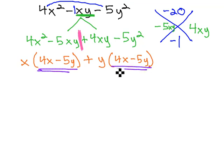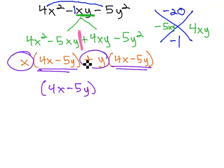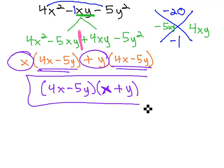We have our matching binomial factor of 4x minus 5y. And the other factor is what's left after those are factored out, the x plus y. And we have our solution.